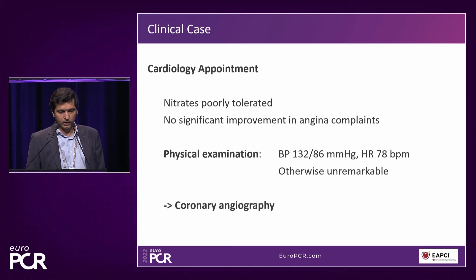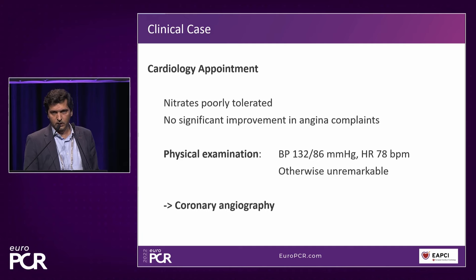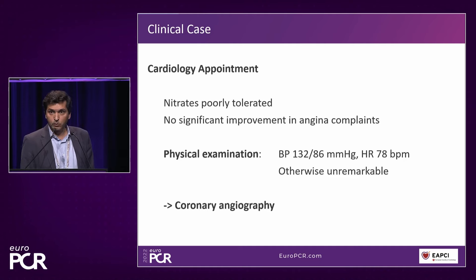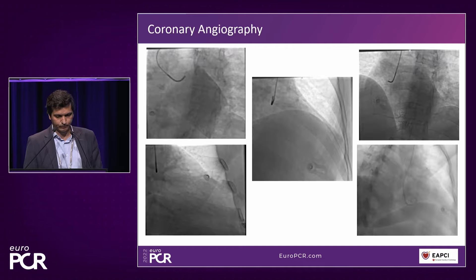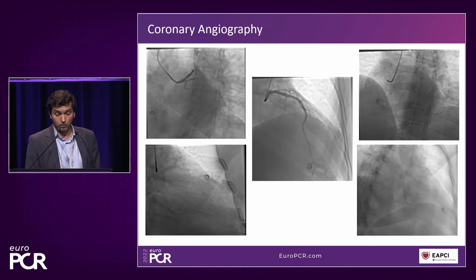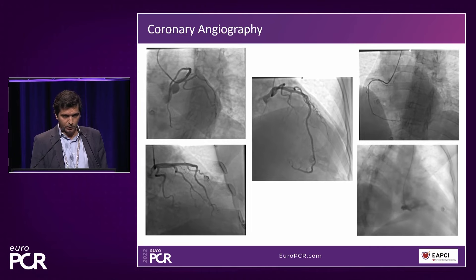When we saw this patient, she still had complaints with no significant improvement in her angina, and the nitrates were being poorly tolerated. On physical examination, blood pressure was 132/86 and heart rate 78, otherwise unremarkable. It was proposed to do a coronary angiography given her complaints and ischemia on the perfusion scan. The coronary angiography was completely normal — absolutely no disease in either the left or right coronary arteries.